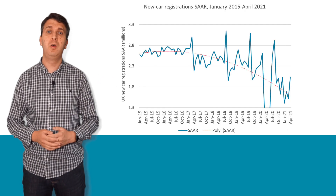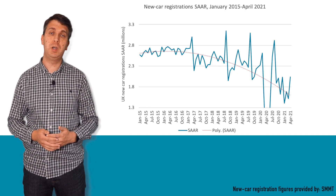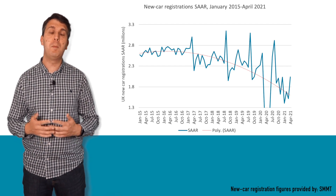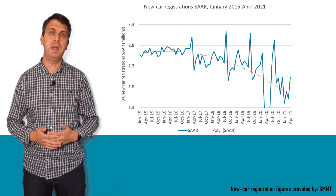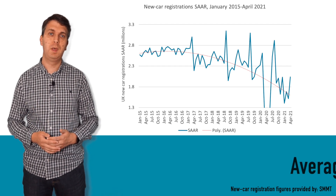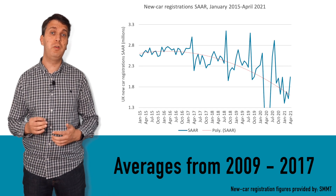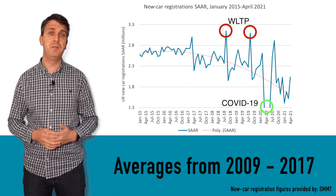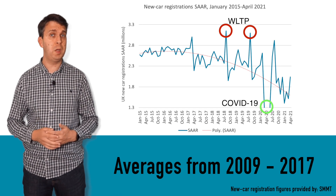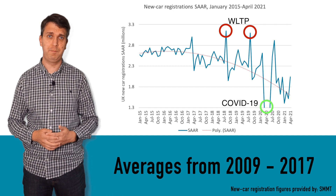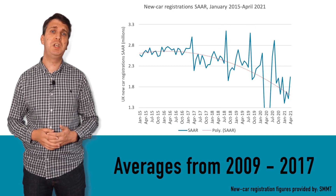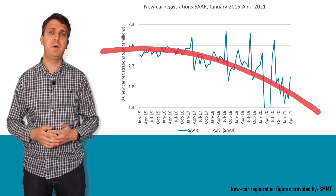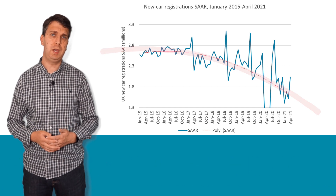If we look at this graph, which tracks the SAR in the UK new car market from January 2015 to May 2021, we can see a more meaningful path of how the market has performed. Here, the average percentages are taken from between 2009 and 2017, disregarding the market distortions of 2018 to 2020 because of WLTP and COVID-19. While the raw registration data shows the peaks and troughs, the SAR shows a path of decline with various spikes dependent on political and market impacts.